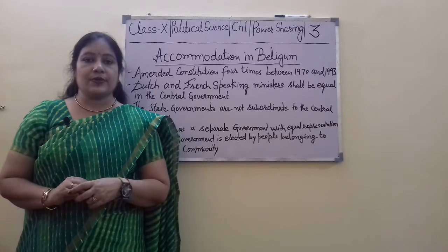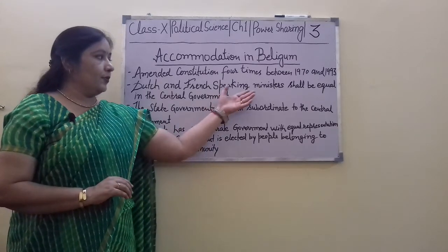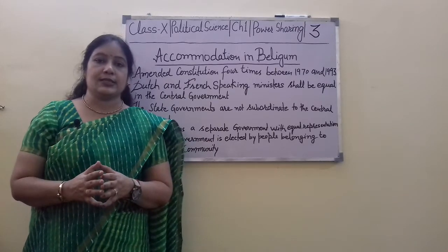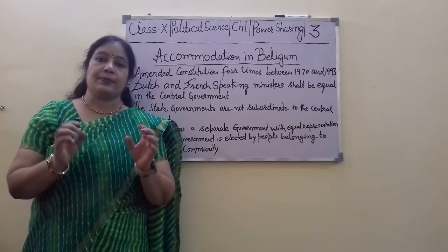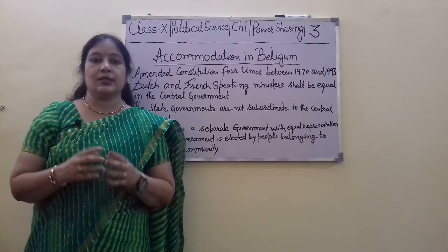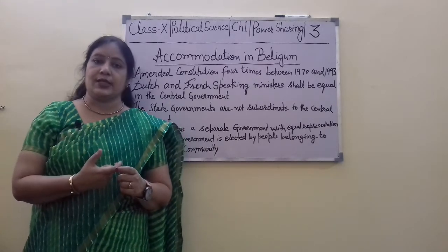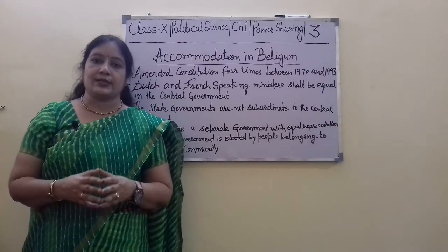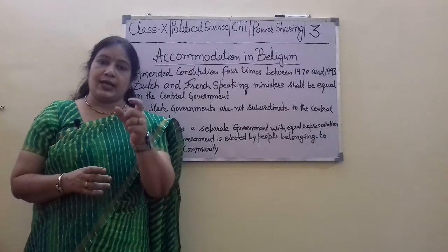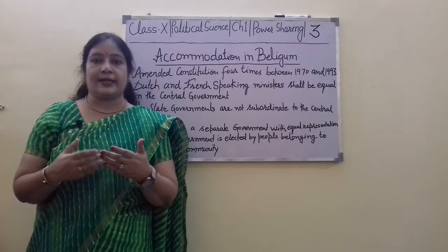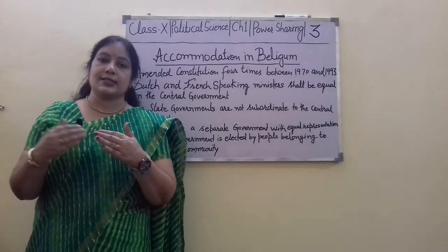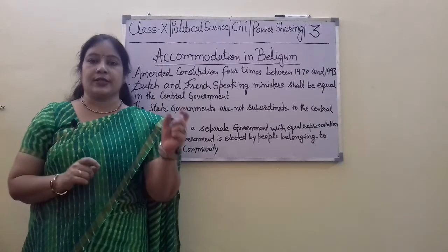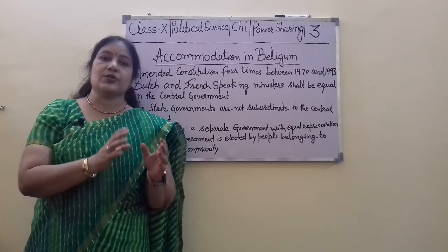The measures they adopted: first, the central government will comprise of ministers from both the communities, which are the Dutch and French community. The number of ministers shall be equal — French-speaking and Dutch-speaking. So if there is a special majority required for a decision to pass, then no one community can change things unilaterally. The other community will need to be on board because the number of ministers is equal, and majority can only be achieved when the other community also votes.